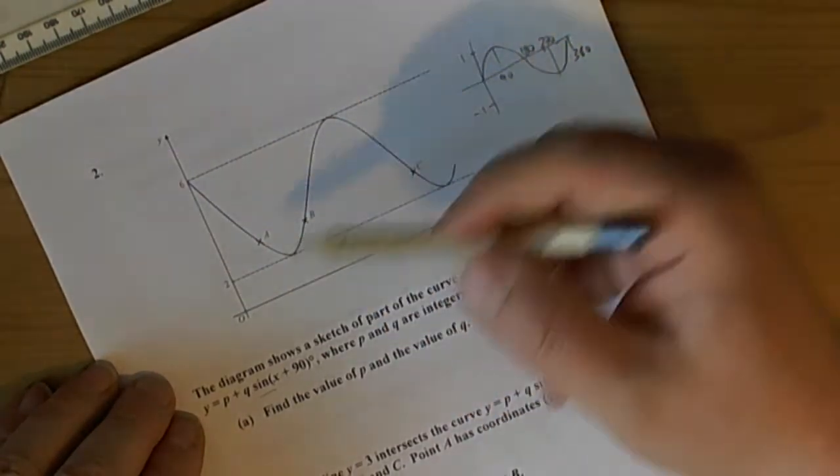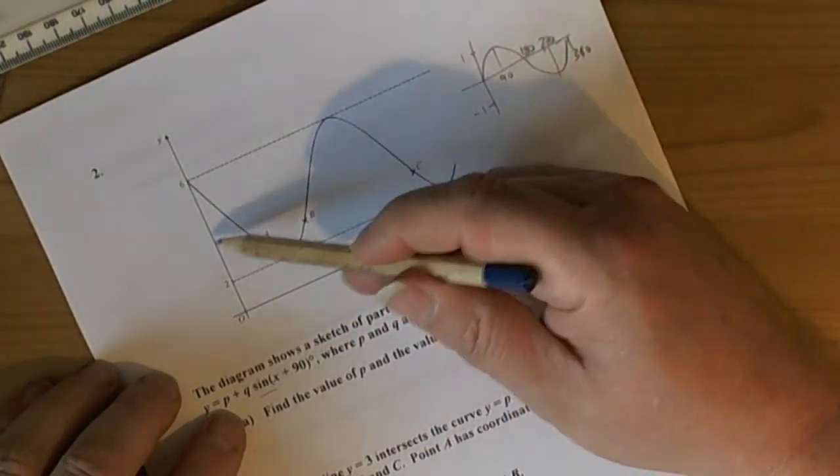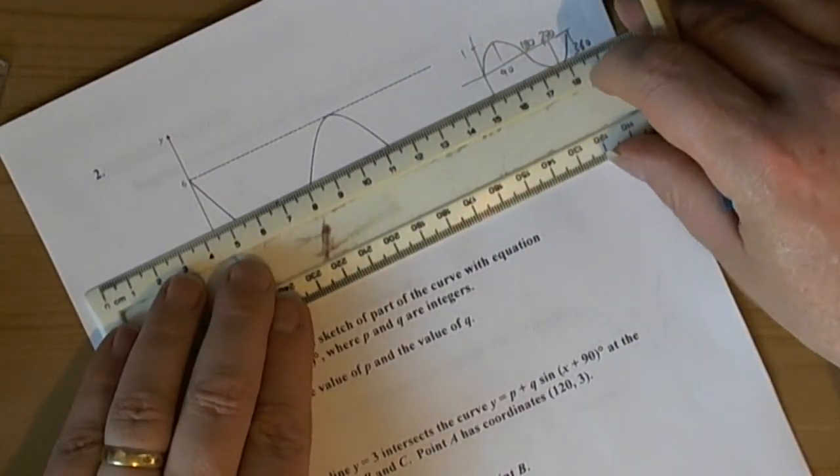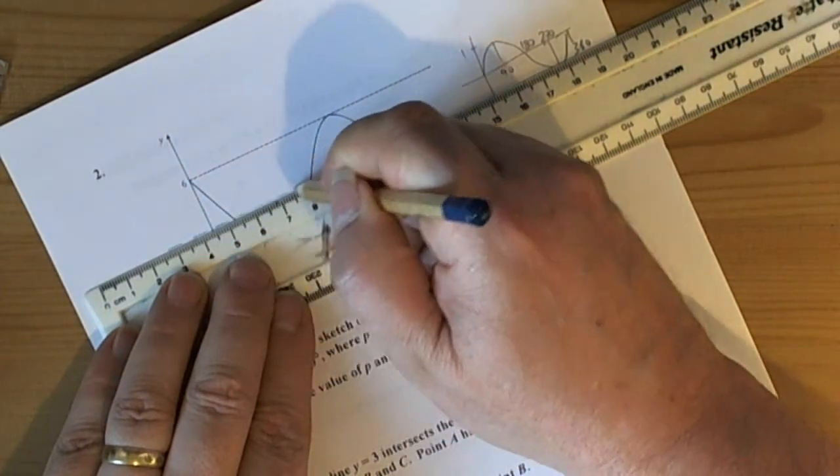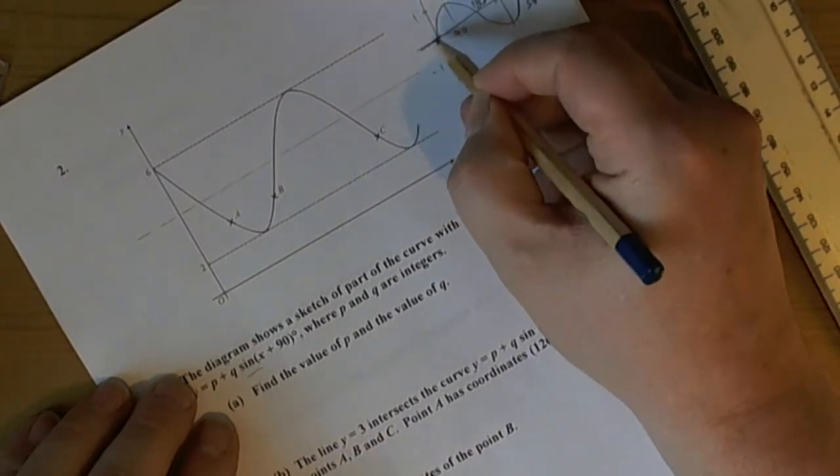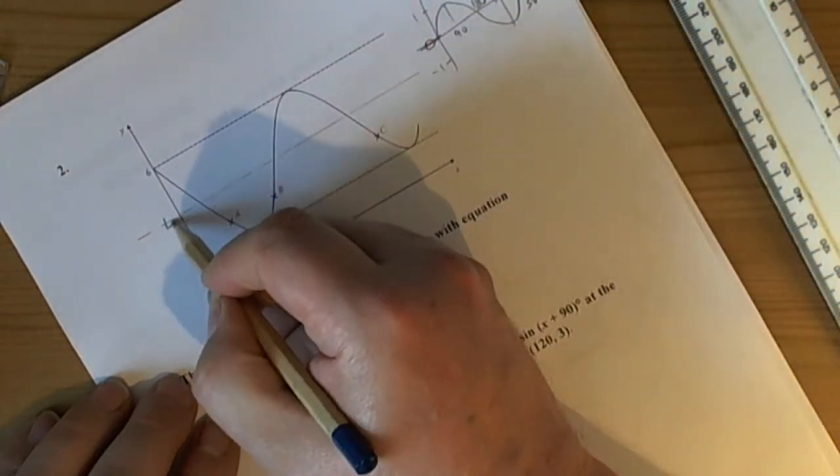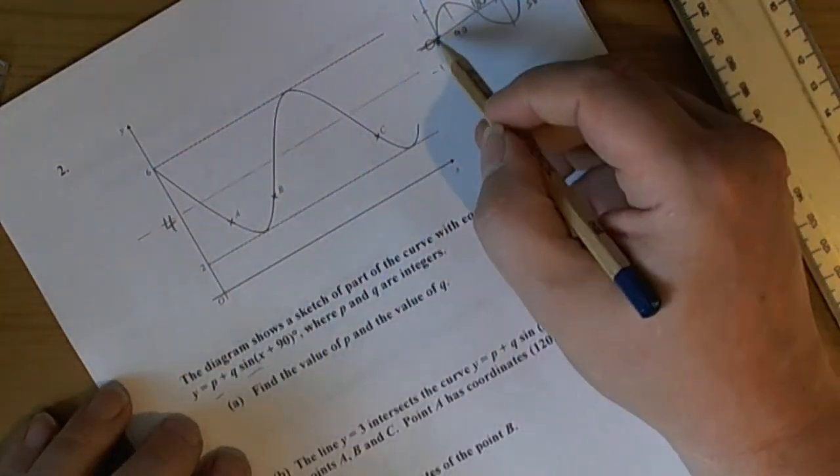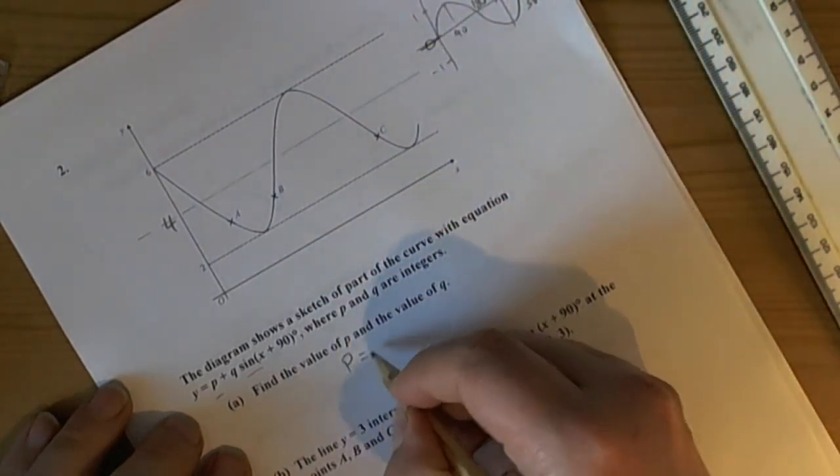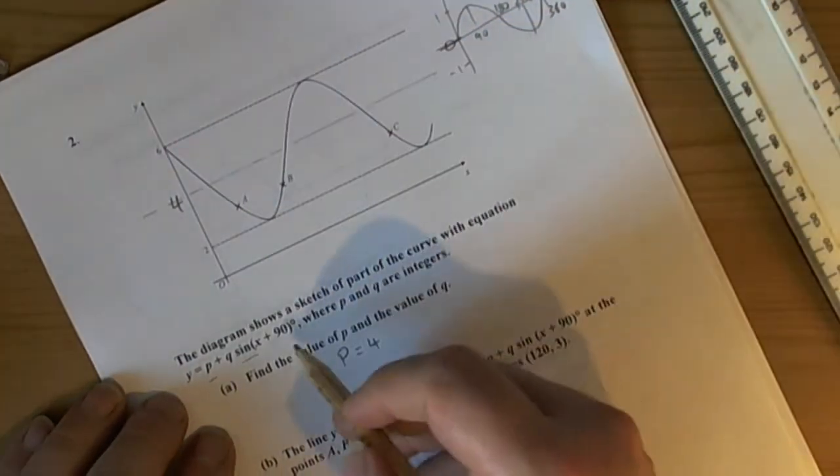And we can see that we've translated the curve up so the best way of doing this is to look for where the new axis point has moved to. So the line of symmetry is going to be half way through here. So original axis went through the 0 and the original axis has now moved up to where 4 is. So we can now see that the original curve has been translated up 4 spaces so P will equal 4.